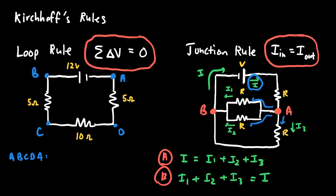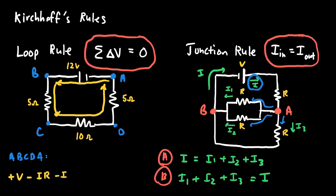For example, starting at point A and moving across the battery toward point B gives a voltage rise of plus V. Reaching the 5-ohm resistor gives a voltage drop of I times R. The same is true for the next two resistors: another drop of I times R for the 10-ohm resistor, and another I times R for the last 5-ohm resistor. Setting the sum equal to zero gives the loop rule equation.